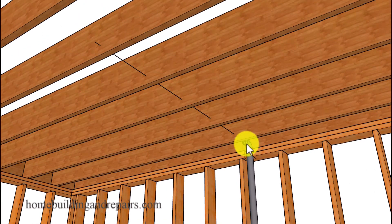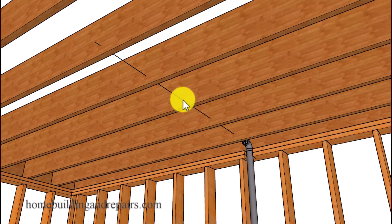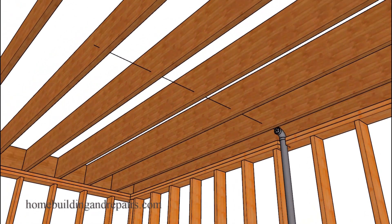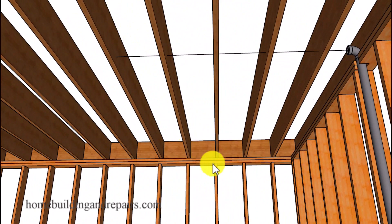So for example, if I needed to raise each one three-eighths of an inch, then I would simply start by adding three-eighths of an inch here, three-quarters of an inch here, and then an inch and an eighth here. Again, you could do this if the joists are equally spaced — 16 inches on center for example.